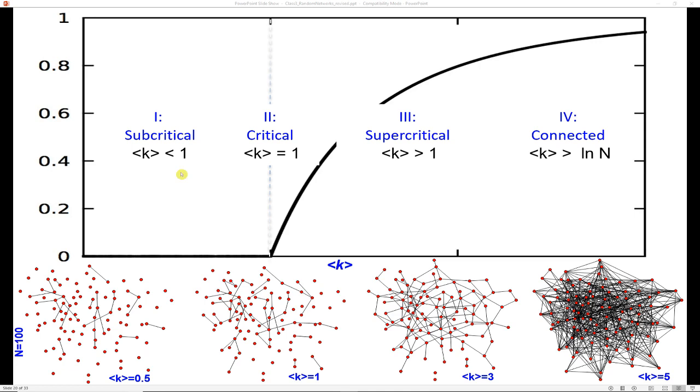And so here's some terminology for describing the network as it goes through this evolution. First, you have a subcritical state where the average degree is less than one. When the critical point is reached, the average degree is equal to one. And as the average degree starts to get above one, then it reaches a super critical state. And finally, it will be completely connected once the average degree is greater than the natural log of the total number of nodes in the network.